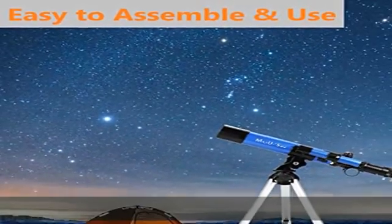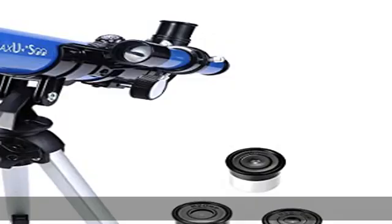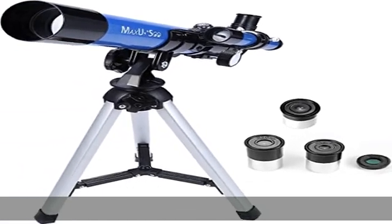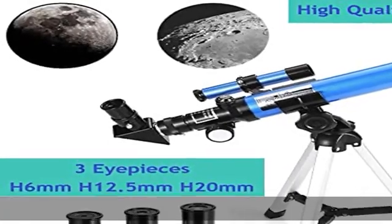Kids lunar telescope F400 x40 with moon mirror includes three interchangeable eyepieces: H20mm, H12.5mm, H6mm, which you can enjoy different magnification power.